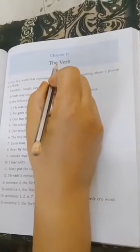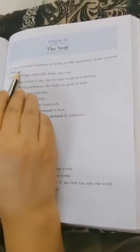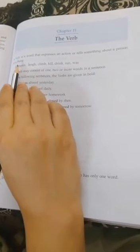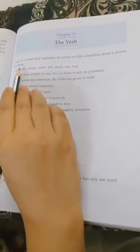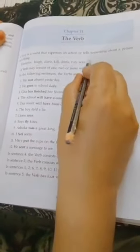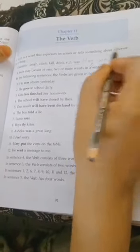Asalaam alaikum, this video is for Class 6, Chapter 11: The Verb. So what is a verb? A verb is a word that expresses an action or tells something about a person or a thing. A verb is a doing verb. Examples: laugh, climb, kill, drink, run, was, play, write—all these are verbs.